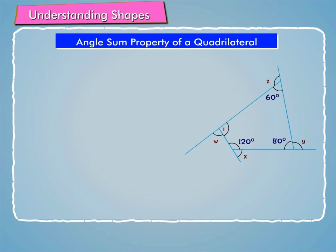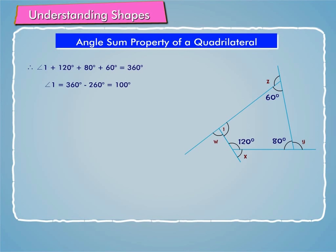We know that the sum of the angles of a quadrilateral is 360 degrees. Angle X and 120 degrees are a linear pair, so angle X plus 120 degrees is equal to 180 degrees. Therefore, angle X is equal to 180 degrees minus 120 degrees, which is equal to 60 degrees.